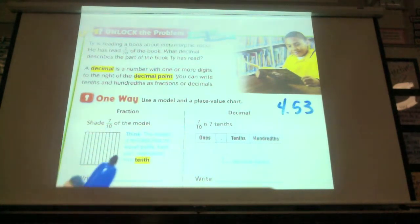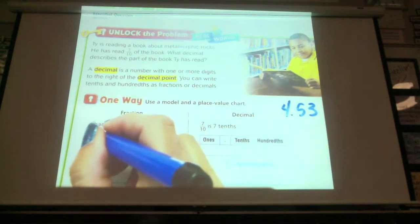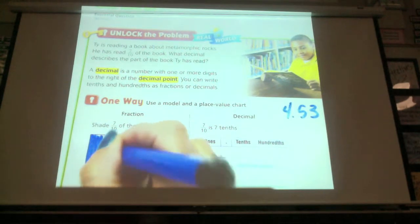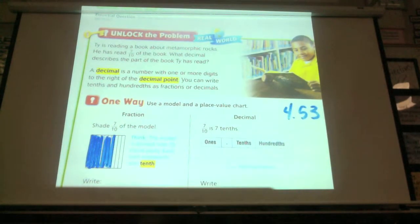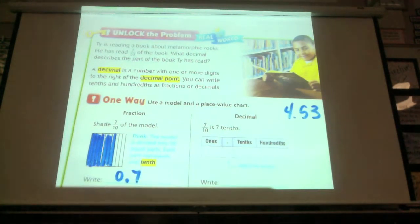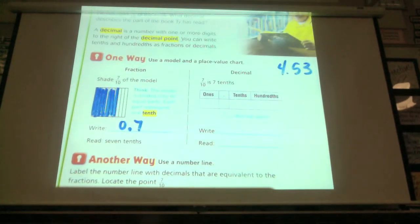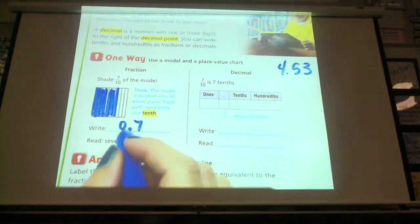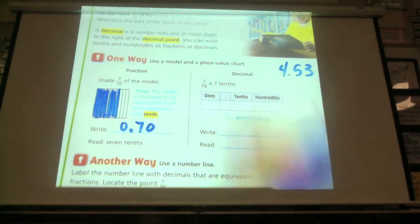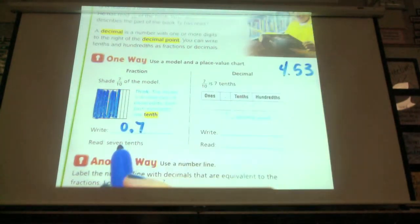So what we're going to do is we're going to take this 7 tenths. We have a model. It's split into tenths here, and we would be shading 7 of them. That's 7. And it would look like 0.7, which if you think again in terms of money, and you think of 7 dimes, which would be 7 tenths, because dimes represent a tenth, then you would have, it would look like this, but that's a whole other story why that still works. But anyways, the 7 would be in the tenths place.